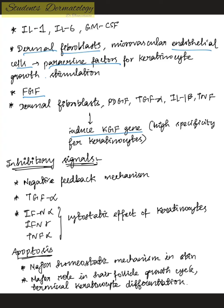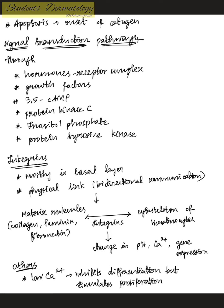Inhibitory signals mainly act by negative feedback mechanism and include interferon alpha, interferon gamma, TNF-alpha, and TGF-beta. Apoptosis is a major homeostatic mechanism both in skin and in the hair follicle — in the hair follicle, apoptosis marks the onset of the catagen phase. Signal transduction happens mainly through the hormone-receptor complex, growth factors, protein kinase C, inositol phosphate, and protein tyrosine kinase.